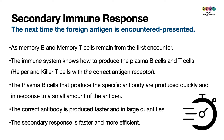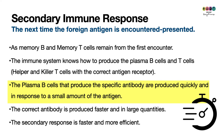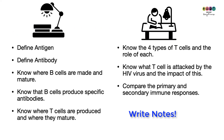The secondary immune response is what happens the next time that foreign antigen is encountered. Because you produced memory B cells and memory T cells during the first encounter, the immune system knows what to do — it knows how to produce the correct plasma B cells that make those antibodies and the specific helper and killer T cells with the correct antigen receptor. The correct antibody is produced faster and in large quantities in response to even a small amount of antigen. The secondary response is faster and much more efficient.